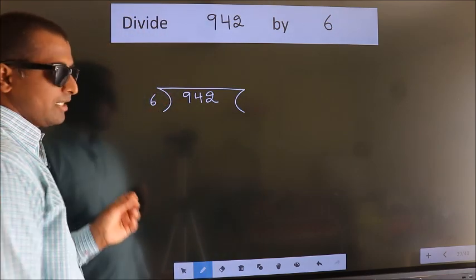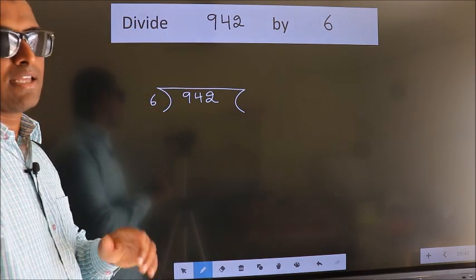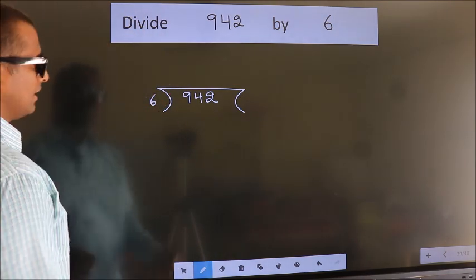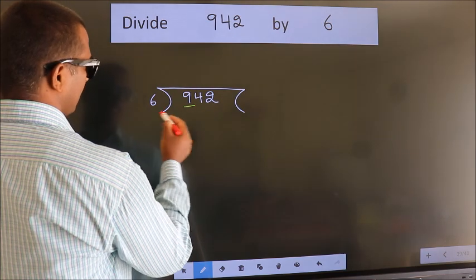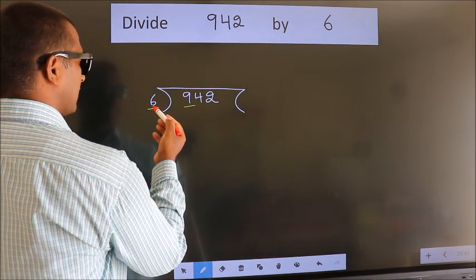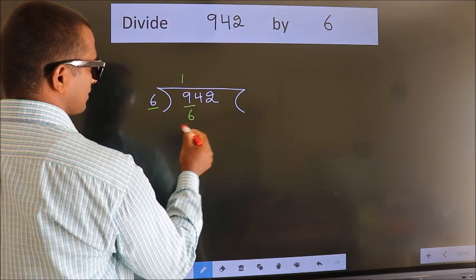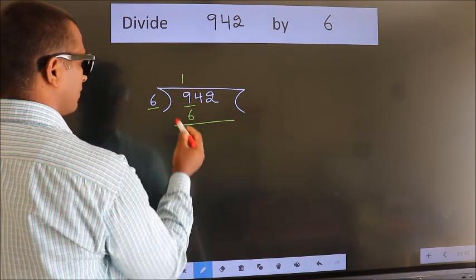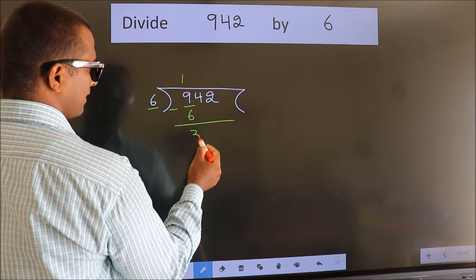This is your step 1. Next, here we have 9, here 6. A number close to 9 in the 6 table is 6 once 6. Now we should subtract. We get 3.